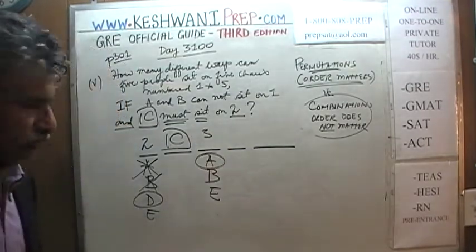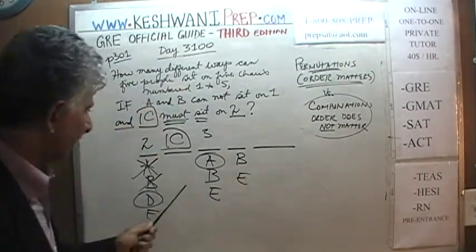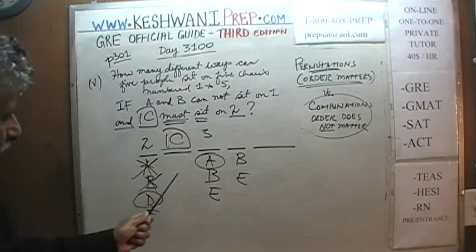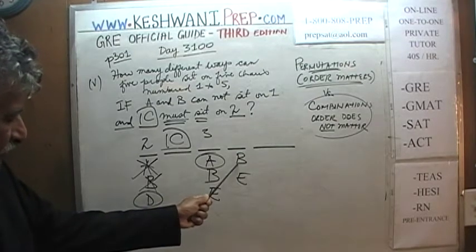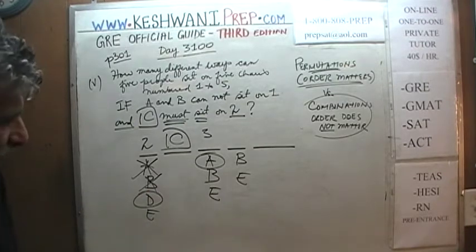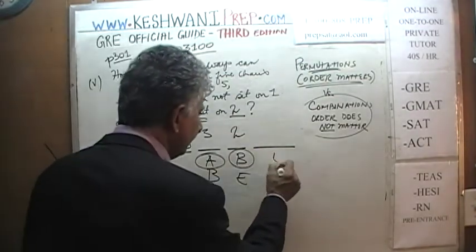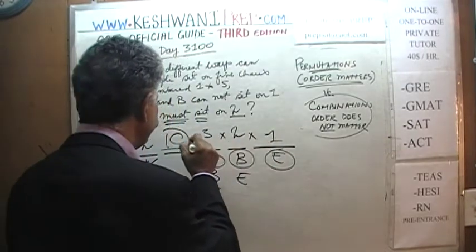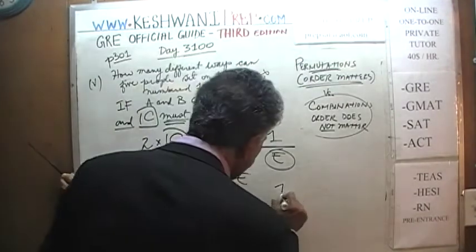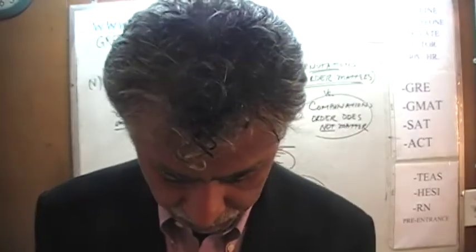Let's pick A for the third seat. After putting A there, we have either B or E for the fourth seat — two choices. Let's pick B, which leaves only E for the last seat — one choice. So the answer is 2 times 3 times 2 times 1, which is 12. Very similar problem to the one we just corrected.